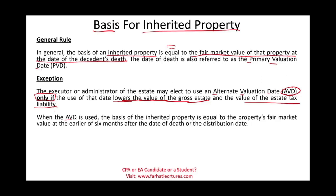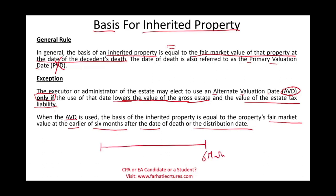When the Alternative Valuation Date is used, the basis of the inherited property equals the fair market value at the earlier of: six months after the date of death, or the distribution date. So if we don't use the PVD and we use the AVD, we look six months from the date of death. If the assets were distributed before that six-month mark, the fair value is taken at the distribution date; otherwise, it's taken at the six-month point after the date of death.